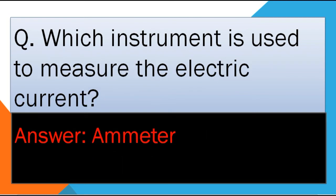Which instrument is used to measure electric current? The answer is Ammeter. Ammeter is an instrument which is used to measure electric current.